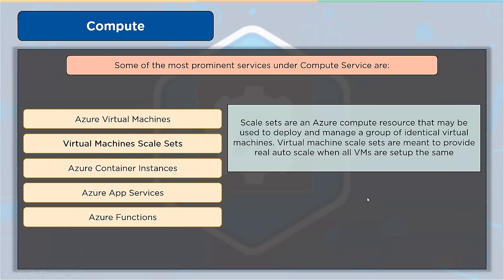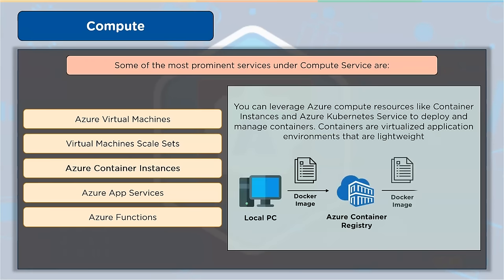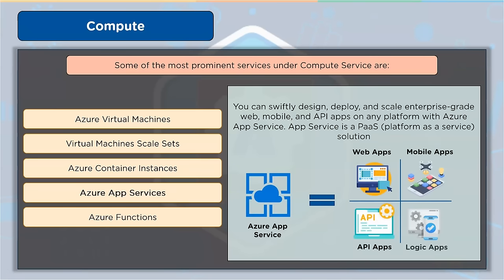Azure Container Instances are compute resources for managing and deploying containers — lightweight, virtualized application environments built to be dynamically formed, scaled, and stopped. You can run many instances of a containerized application on a single host machine. Azure App Service allows you to create, deploy, and scale enterprise-grade web, mobile, and API apps on any platform while using a fully managed platform for infrastructure maintenance, meeting stringent performance, scalability, security, and compliance requirements. App Service is a Platform as a Service solution.